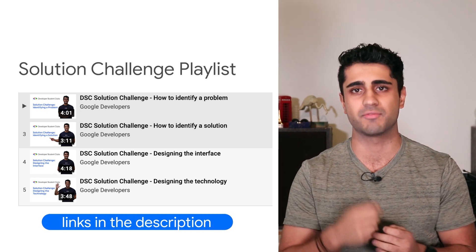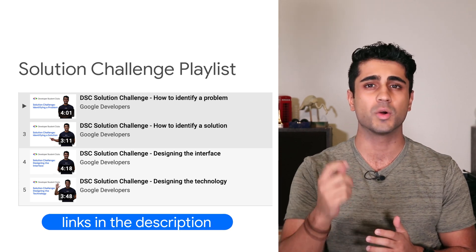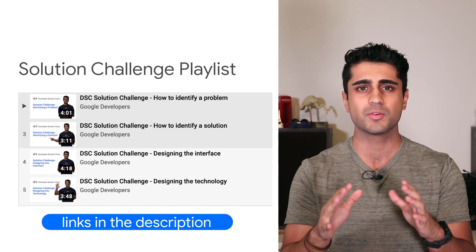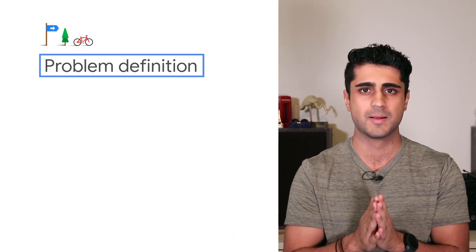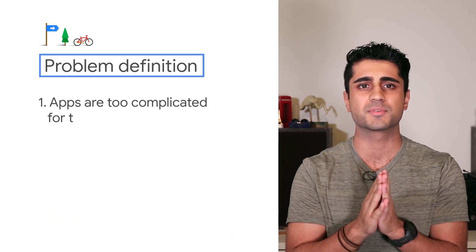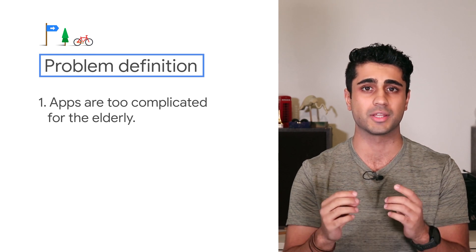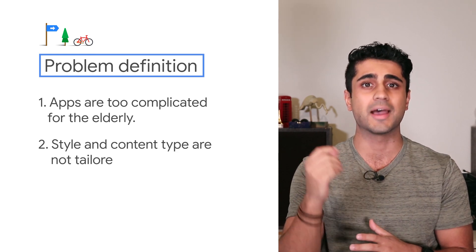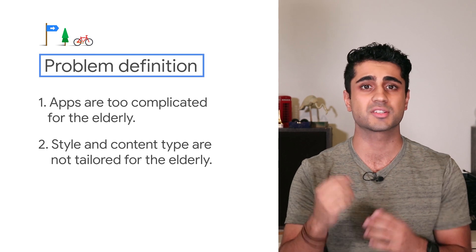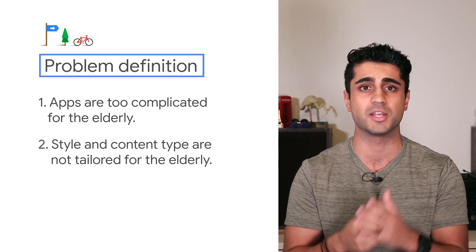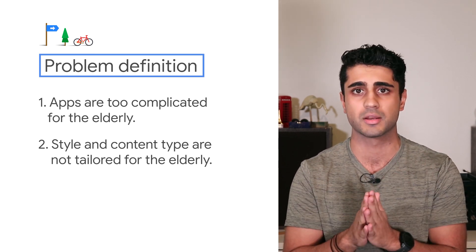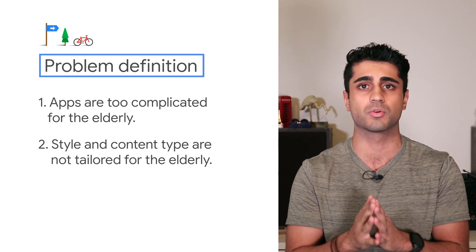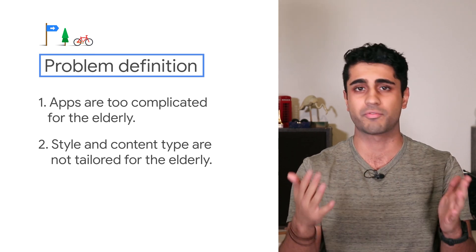For detailed instructions on this step, check out this video series. Once we're done with our design sprint, let's assume we've defined the problem as: mobile apps can be too complicated for the elderly and the buttons are too small, and elderly users sometimes find the discovery stage too complicated or find the course tutor style to be too millennial-oriented or fast.